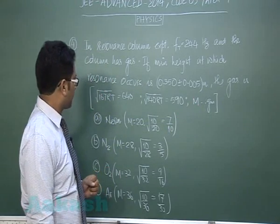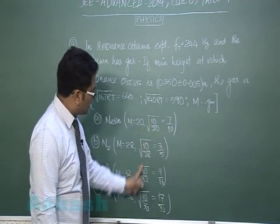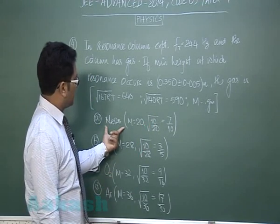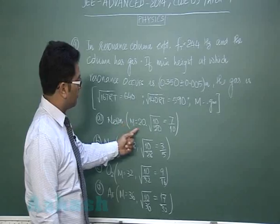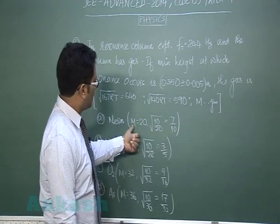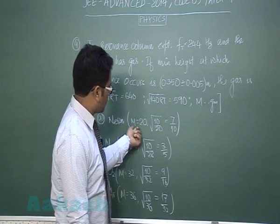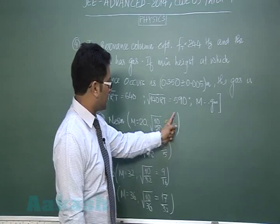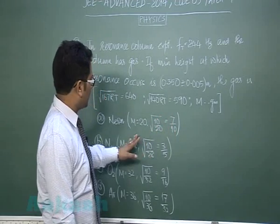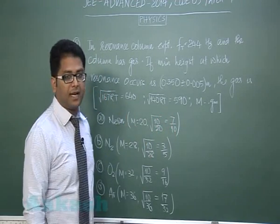To make the calculation easier, this value has been given, this has been given, and all the molar mass has been kept in gram. And even to further simplify, like say if the gas is neon, then you will be requiring this data where molar mass is 20 and 10 by 20 is 7 by 10, but you have to see that this mass has to be kept in gram.